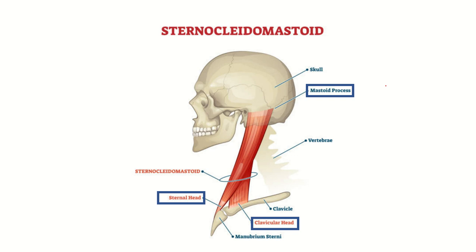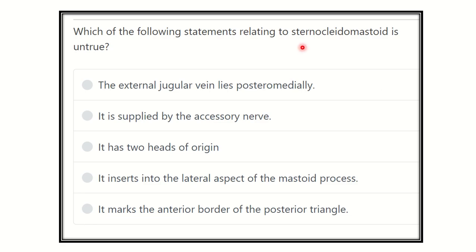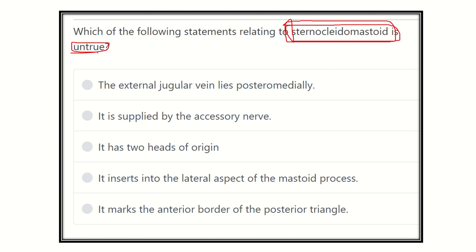Welcome to another question and answer session for the MRCS exam. The question is: which of the following statements relating to the sternocleidomastoid is true? The options are: the external jugular vein lies posteromedially; it is supplied by the accessory nerve; it has two heads of origin; it inserts into the lateral aspect of the mastoid process; it marks the anterior border of the posterior triangle.